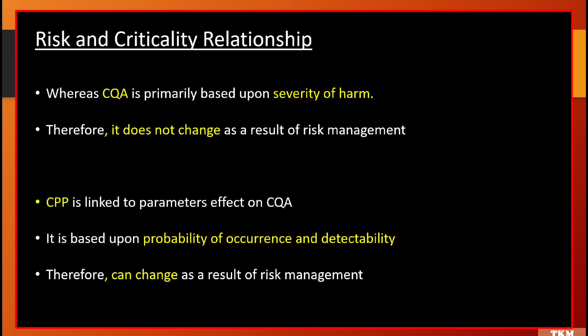If we talk about CQA and CPP, things are a bit different. CQA is primarily based upon severity of harm — how severe the harm will be — and based on that, we pick up the critical quality attributes. Therefore, CQA does not change as a result of risk management. Whereas CPP is linked to a parameter's effect on CQA, and it is based upon probability of occurrence and detectability. Therefore, CPP can change as a result of risk management.